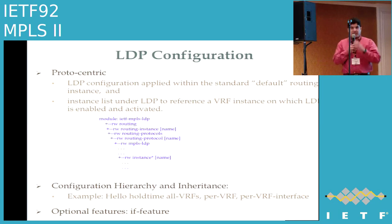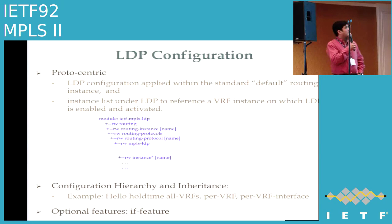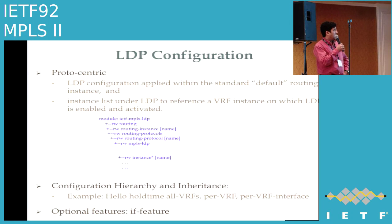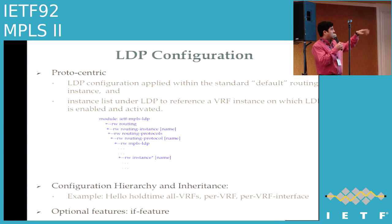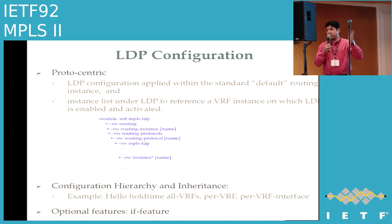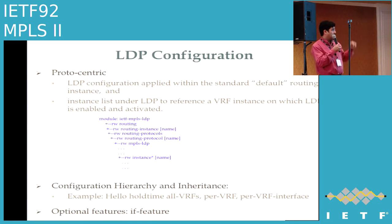Starting with LDP configuration: it is currently proto-centric, defined under a default routing instance with its own routing protocol identity called LDP. The model supports configuration hierarchy and inheritance — parameters can be configured at different levels: global scope, per-VRF scope, and per-interface scope. The model caters to all these inheritance requirements and includes many optional features.